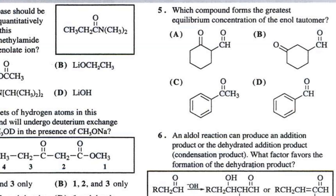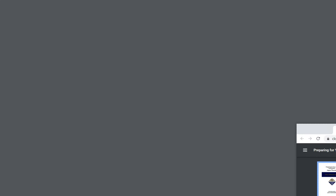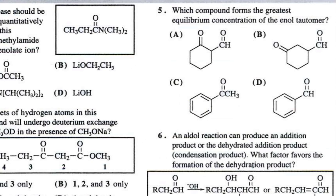Looking at the options, we have a couple of good options and a couple of bad ones. Option D should be thrown out right away — there's no way to make a tautomer there because there's no acidic proton. You can't make a double bond on that carbon because it already has four bonds. There's nothing to remove to make it any better, so D is out.